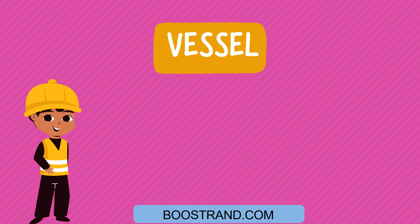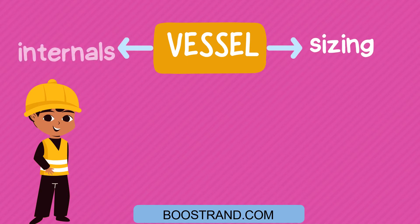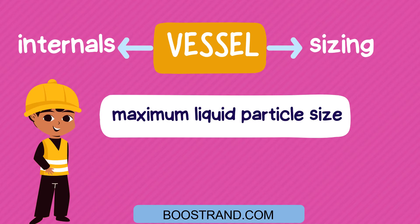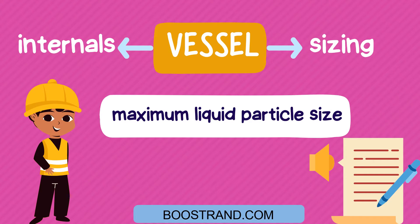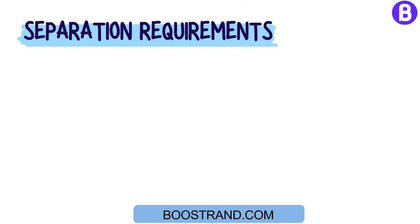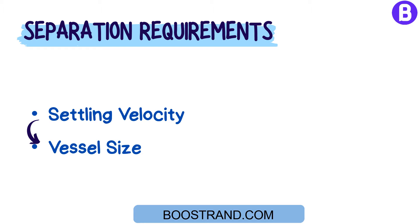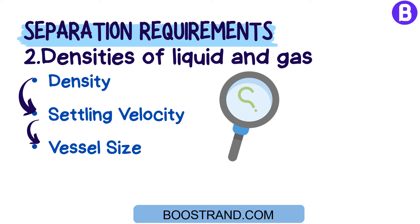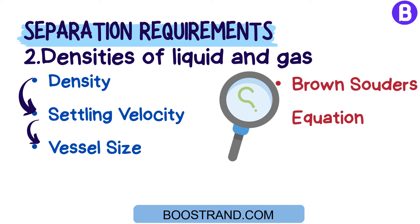All these factors can drastically affect the sizing and internals of the vessel. They are generally expressed in the maximum liquid particle size, so they should be well defined from the beginning. The settling velocity is a critical factor that determines the required vessel size. The main factor affecting the settling velocity is related to the density of the liquid and the vapor. We shall see this in more detail when checking Brown-Sauder's equation and the gas handling capacity factor, the K-factor.